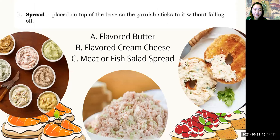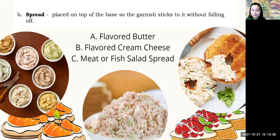The spread is placed on top of the base so the garnish sticks without falling off. It can be flavored butter — softened butter mixed with any flavoring — or flavored cream cheese of any flavor, or a mixture of cream and butter. You can also use meat or fish salad with a mayonnaise base, such as chicken spread, egg spread, or egg mayonnaise. It depends on your taste and preference for your canape.